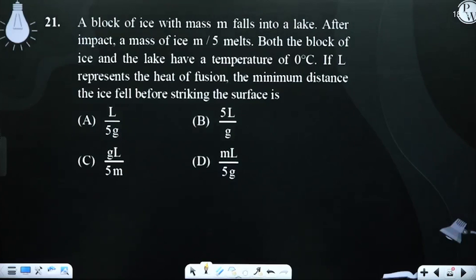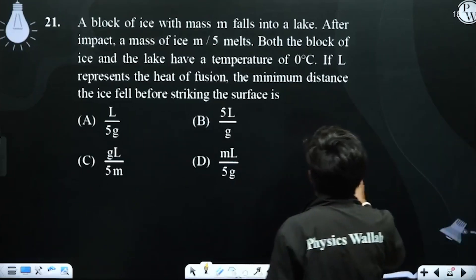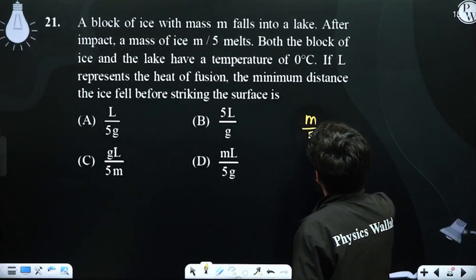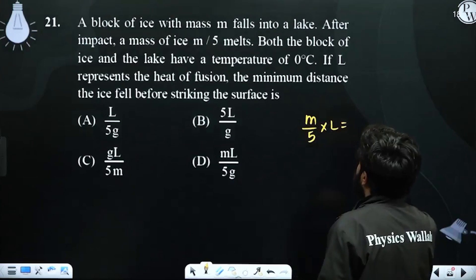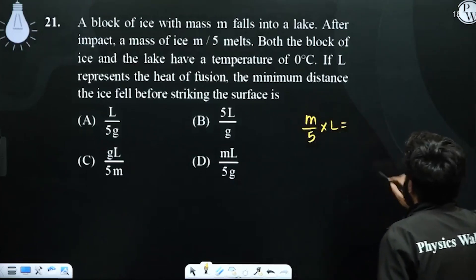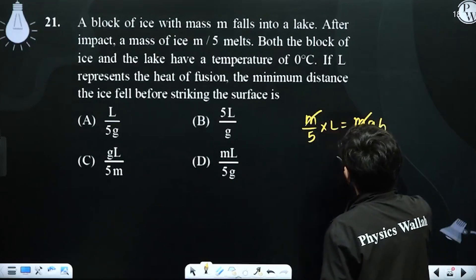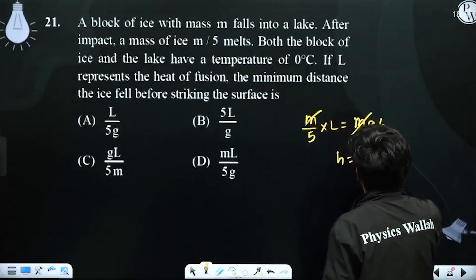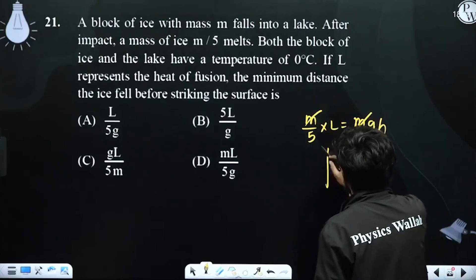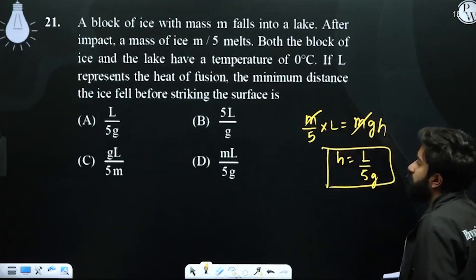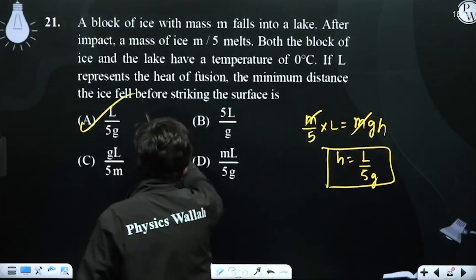So now, here you see m/5 melts. Now you are asking how much distance will give the minimum distance - this is the minimum distance L/5g.